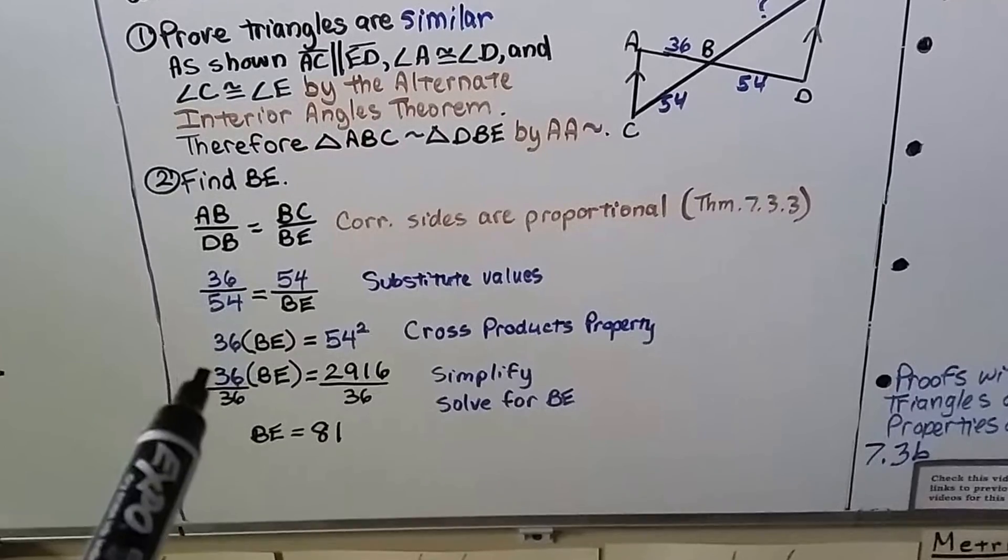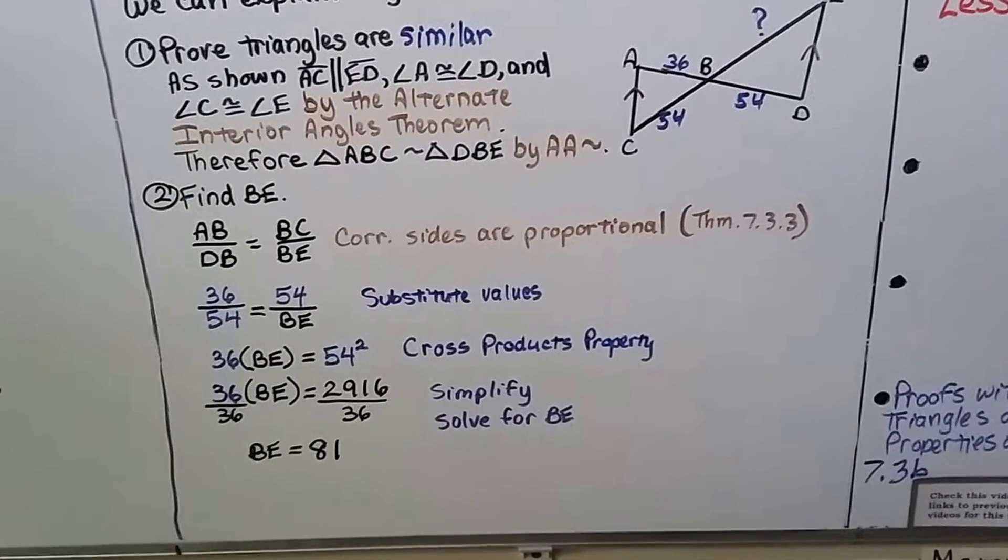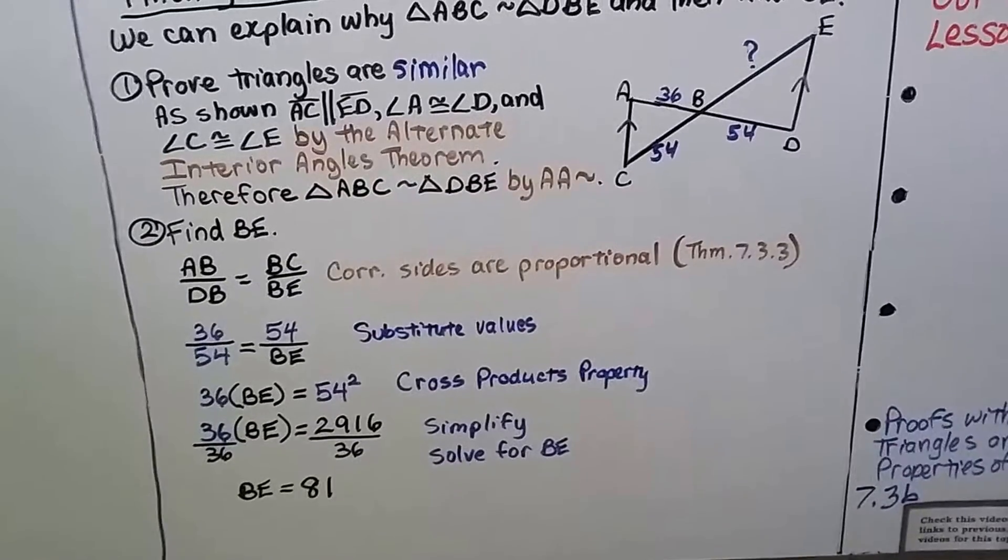We can divide both sides by the 36, and we get that BE is equal to 81. So we found the length.